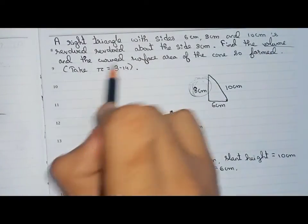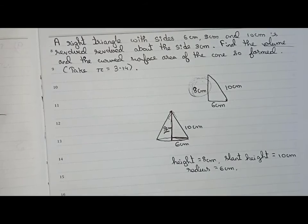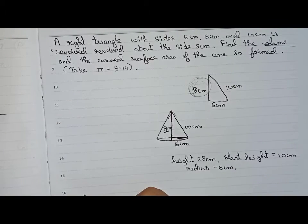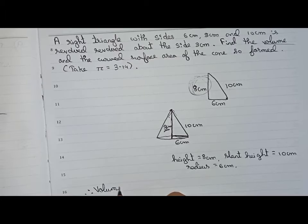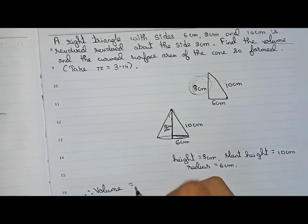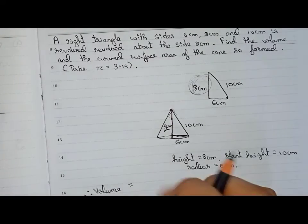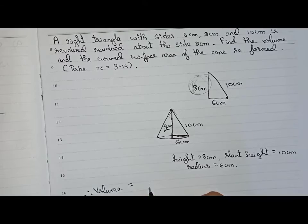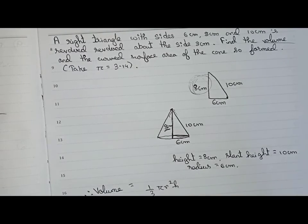So to find the volume and curved surface area of this cone, we write: therefore, volume will be equal to the formula for the volume of a cone, which is 1/3 × π × r² × h.